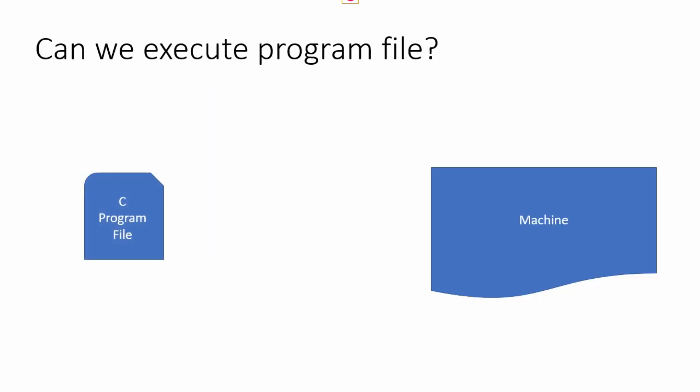If I write a program in my program file, can I execute it directly on a machine? The answer is no, because a machine understands only binary and I'm not going to write my program in binary — I'll be writing it using a readable language. So the machine won't understand it. Then how will I execute my program on a machine?